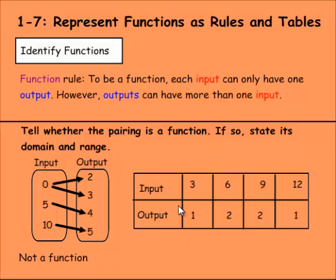This one, we have input of three, output of one, input of six, output of two, input of nine, output of two, input of 12, output of one. All these different inputs have only one output. So it is following that rule. And remember that rule about outputs having more input? One has three and one also has 12, but that's okay. They can have more than one input.